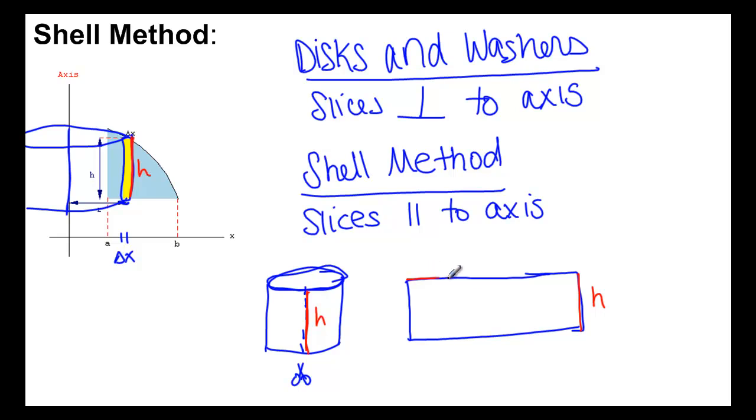The length of this rectangle, call it L, is coming from the circumference of the original shell. So L is going to be the circumference, 2πr. And then the thickness here, if you imagine it still had a little bit of thickness to it, that would just be your delta x.